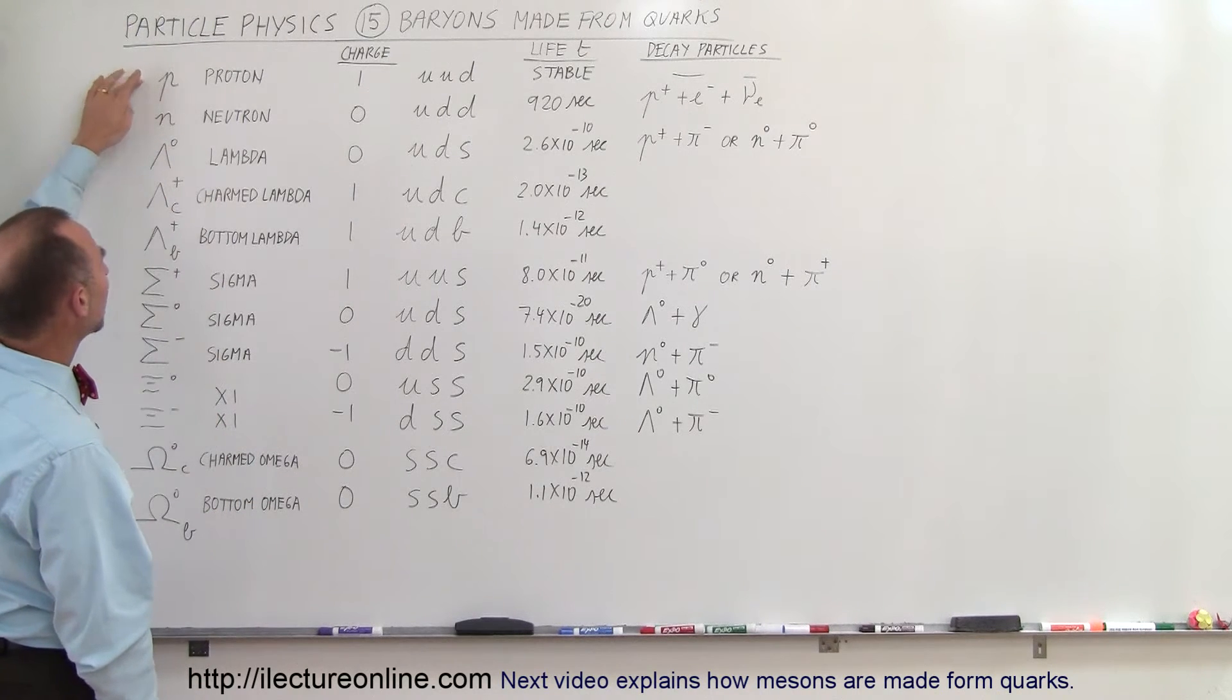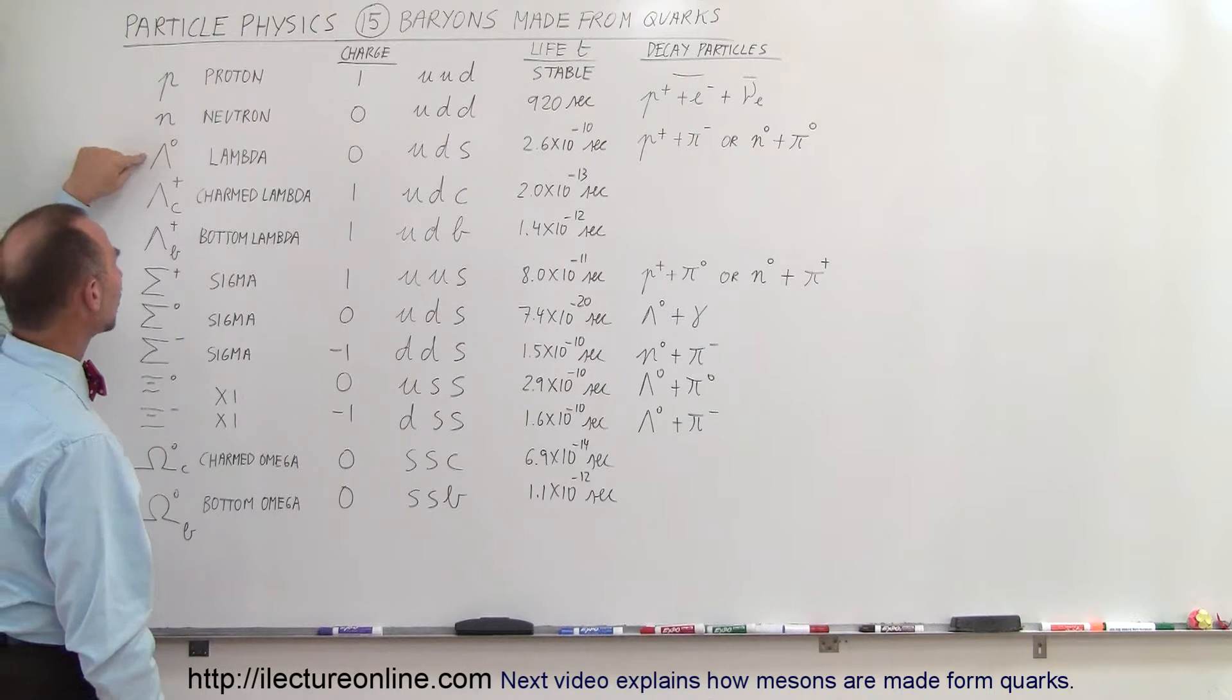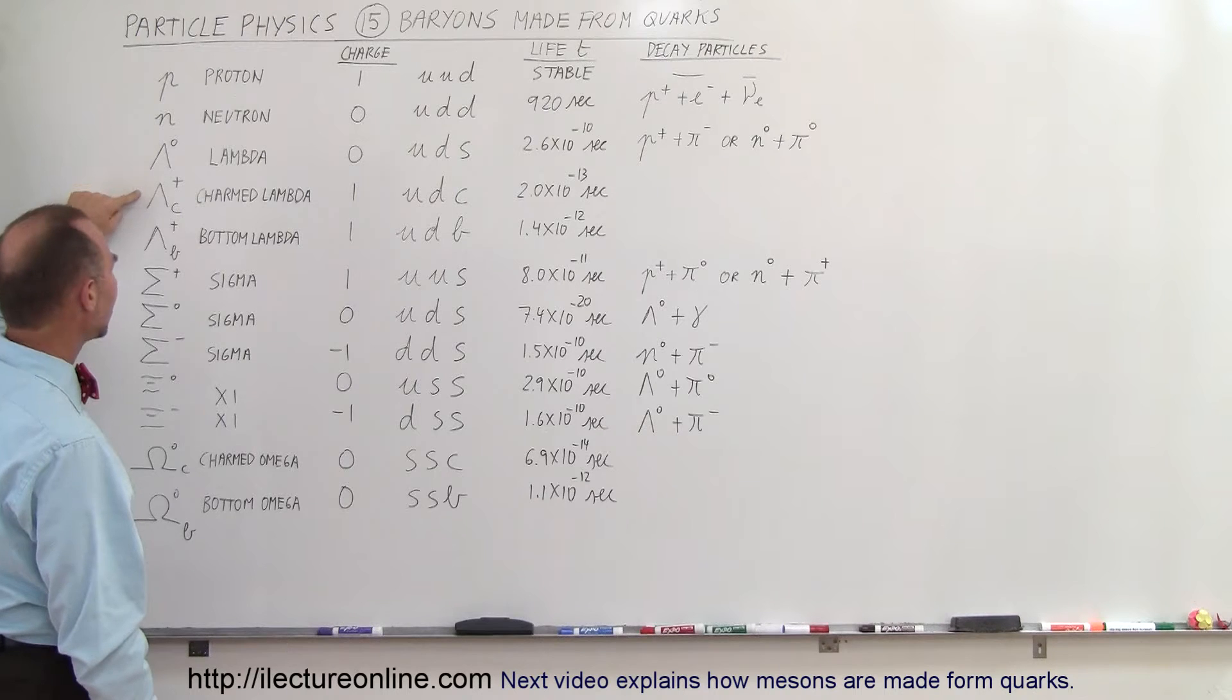So we have the proton and the neutron which make up nuclei of atoms, we have the neutral lambda particle, we have the charmed lambda and the bottom lambda.